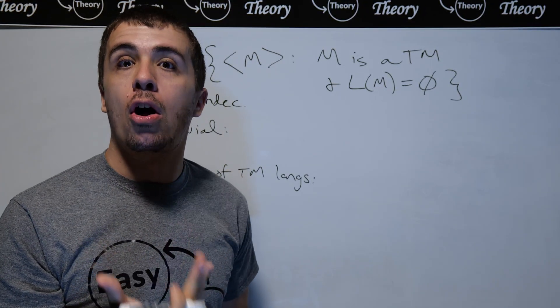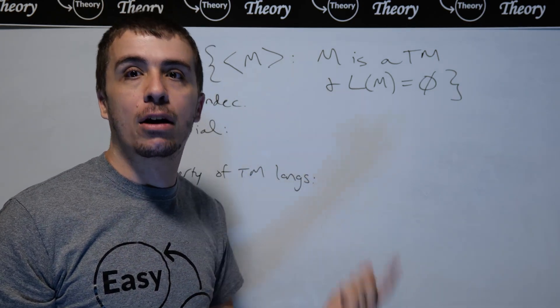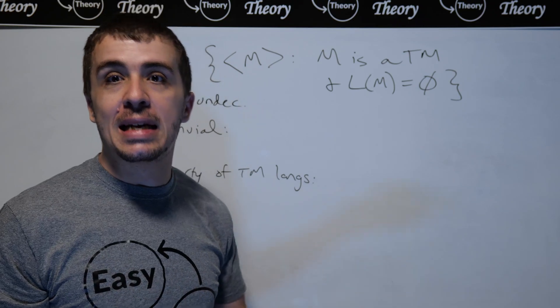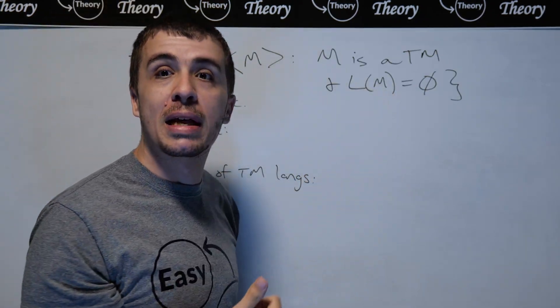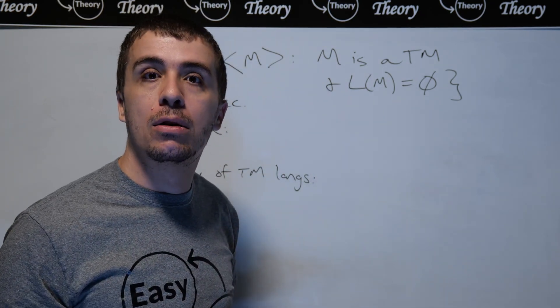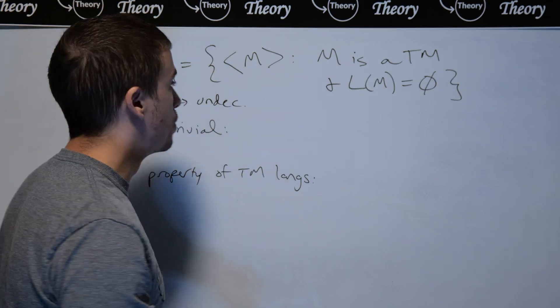So to show that it's non-trivial, all that you need to do is to find some Turing machine that's in there and another Turing machine that is not in here. Namely, I got to find a Turing machine whose language is empty and another Turing machine whose language is not empty because we're dealing with the emptiness for Turing machines problem.